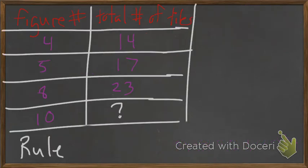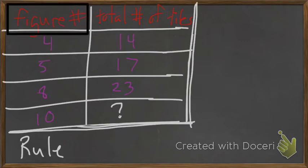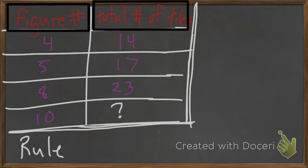So, we've been looking at charts with values, and we often find a rule for the numbers we are given. We usually have figure number on one side and total number of tiles on the other, meaning we've got some shapes with some tiles. If this is figure one, figure two would look something different, figure three would also be different. But in this case, we just have a chart with numbers. Now, we need to find out our rule from this chart.